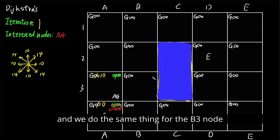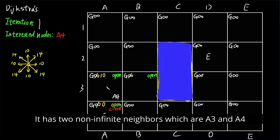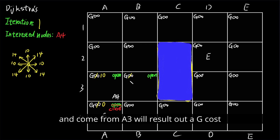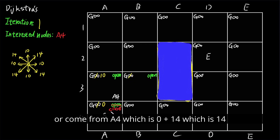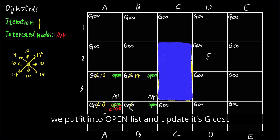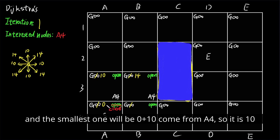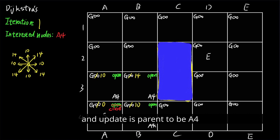We do the same for node B3: put it into the open list and update its g cost. It has two non-infinite neighbors, A3 and A4. Coming from A3 gives 10 plus 10 = 20; coming from A4 gives 0 plus 14 = 14. The 14 is smaller, so we update B3's parent to A4. For B4, we put it into the open list and update its g cost. It has three non-infinite neighbors with values 0, 10, and 14. The smallest is 0 plus 10 = 10, coming from A4. We update B4's parent to A4.